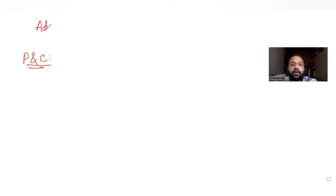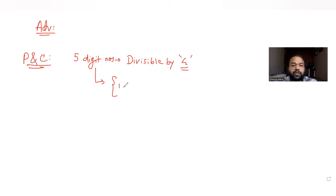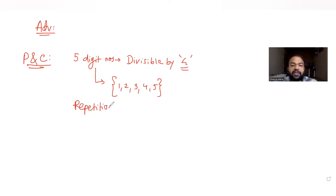Today's question is from the year 2018. It says you need to form 5-digit numbers which are divisible by 4. We need to form 5-digit numbers using the set of numbers from 1 to 5 which are divisible by 4. The options for choosing the numbers are 1 to 5, and we need to form a 5-digit number divisible by 4. It is also stated that repetition of digits is allowed.